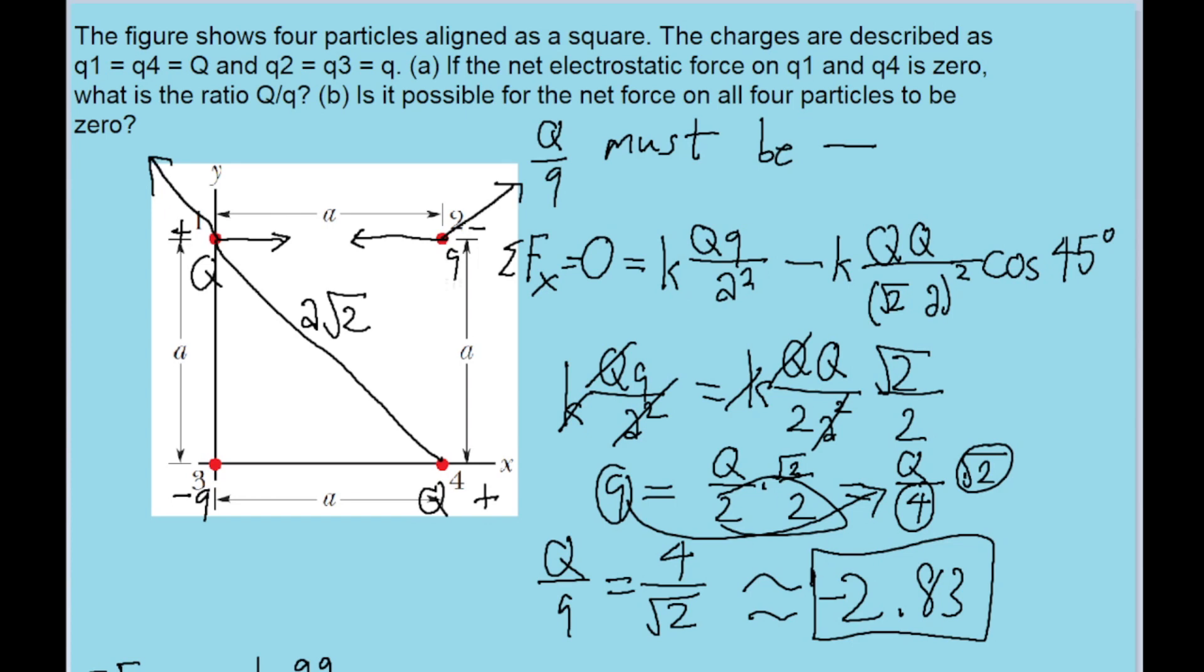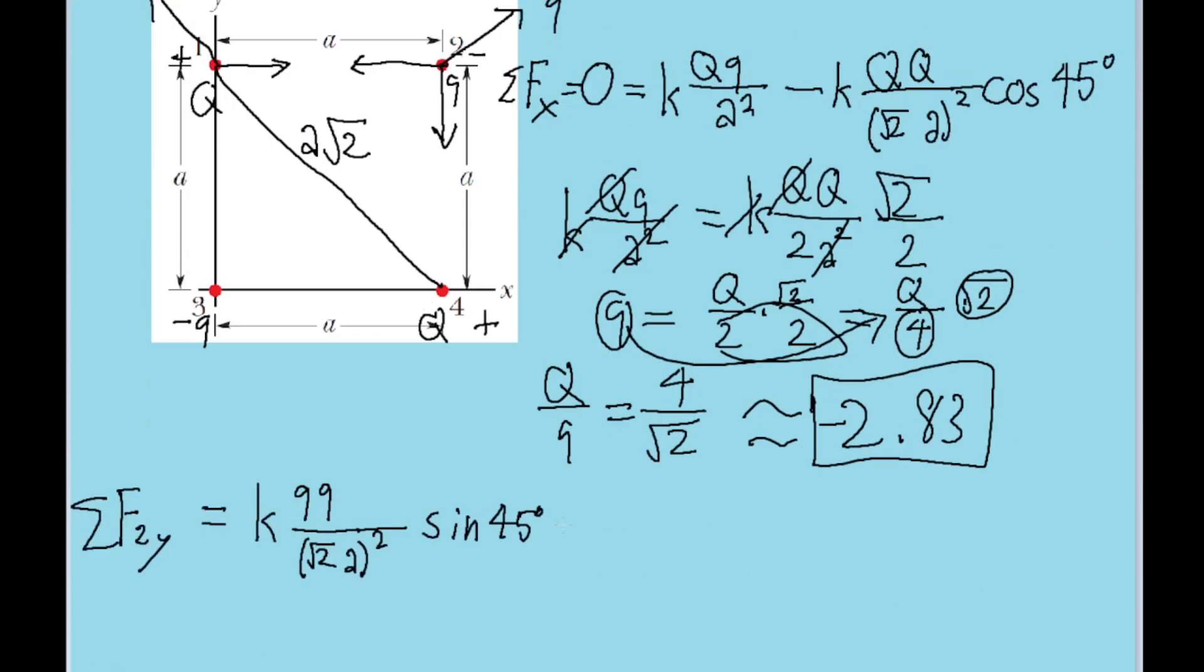And from charge four, charge two is going to experience a direct downwards force because charge four is positive, so they're opposites and opposites attract. So we then subtract K times small Q times big Q divided by A squared. And if we want charge two at rest, then this whole formula should be equal to zero.